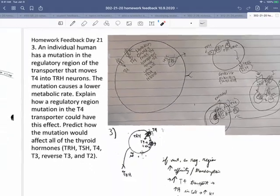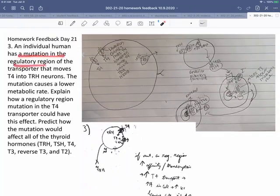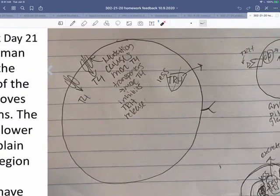Number three, an individual human has a mutation in a regulatory region of the transporter that moves T4 into TRH neurons. Mutation causes lower metabolic rate. So if it causes lower metabolic rate, and it's the transporter that's moving T4 in, and T4 inhibits TRH, so lower metabolic rate means that we've got less TRH, which means we must be moving in more T4.